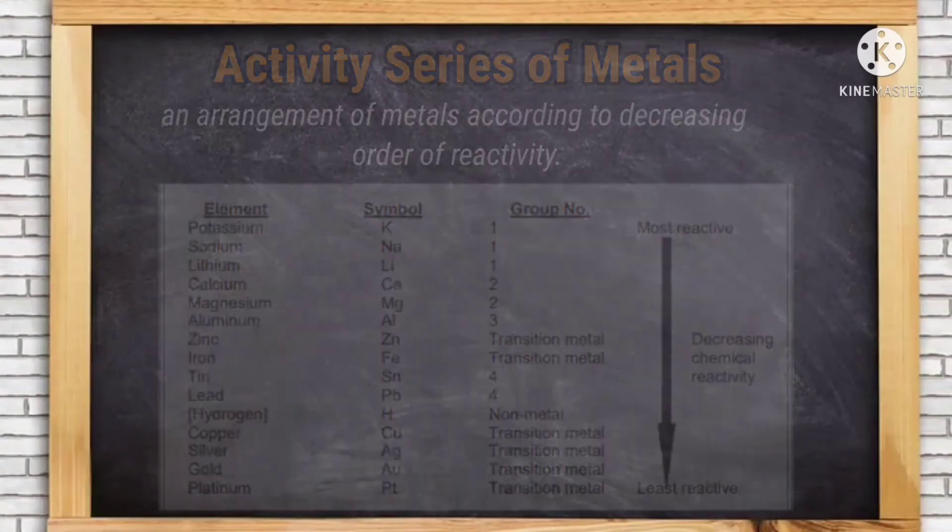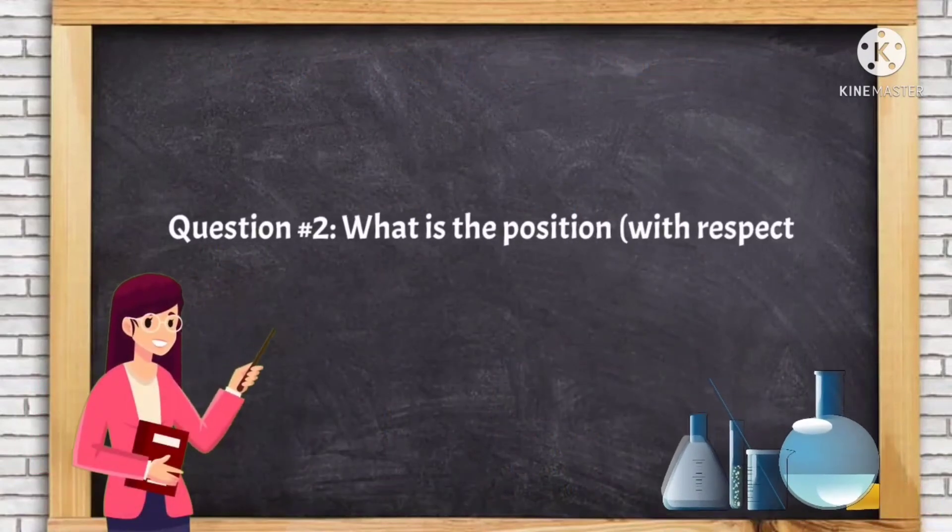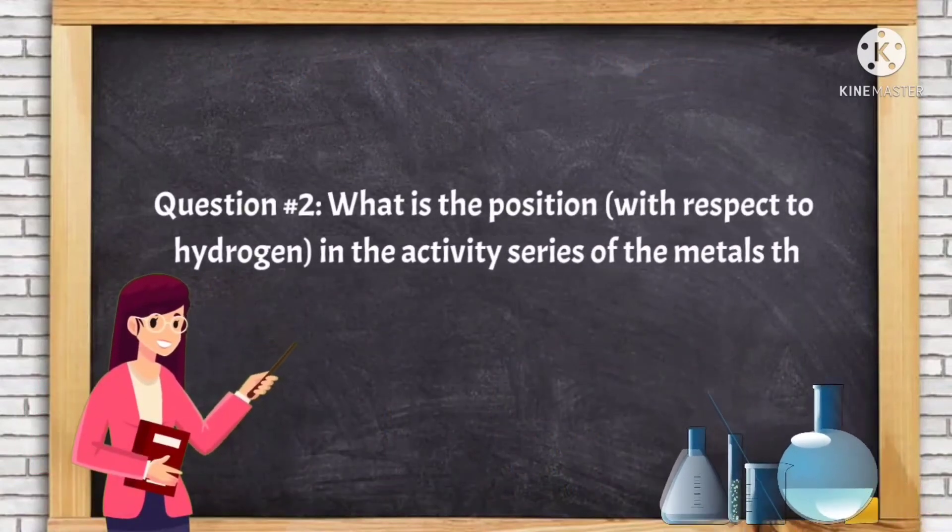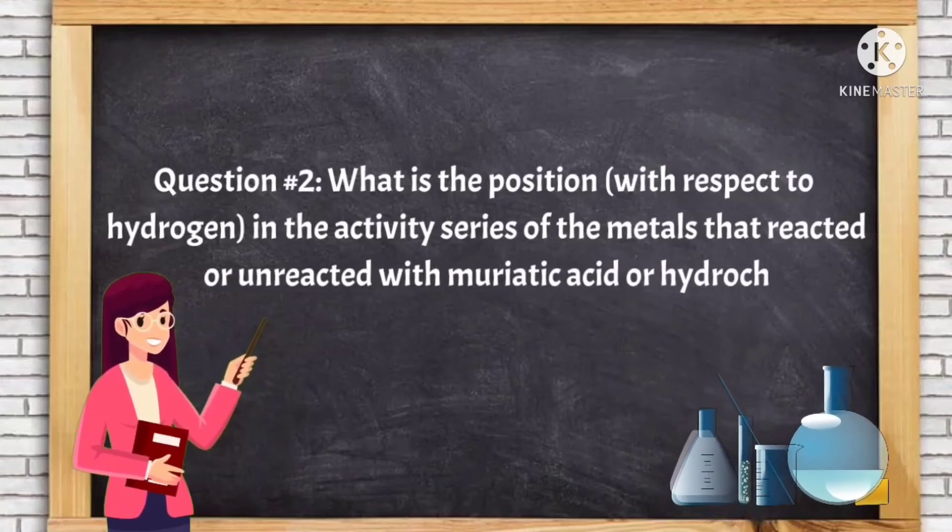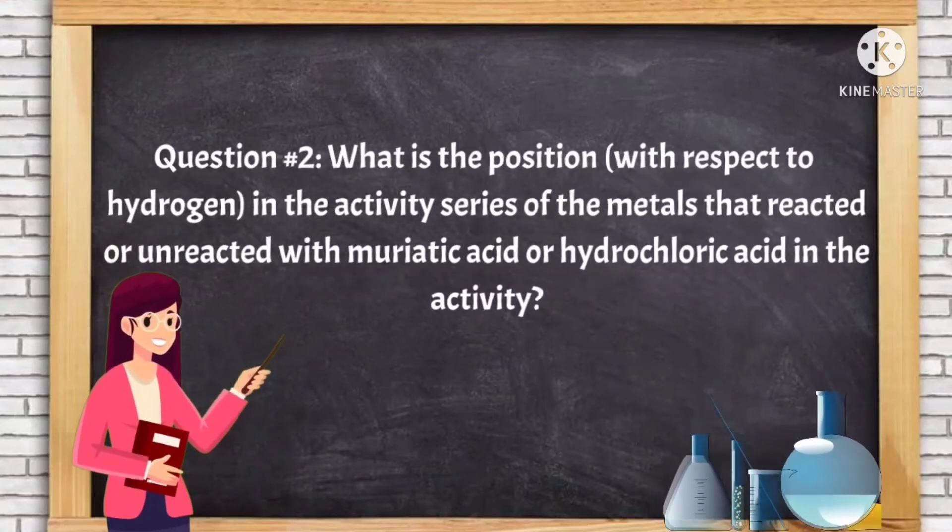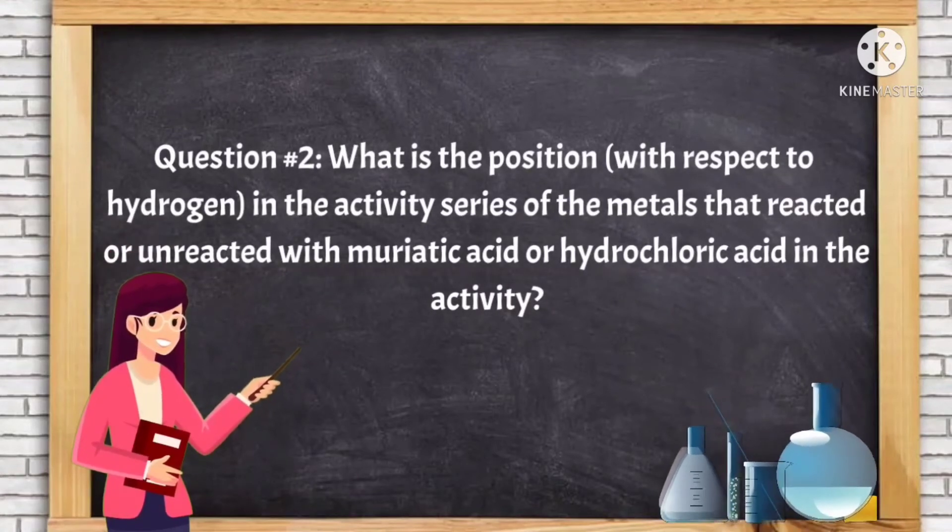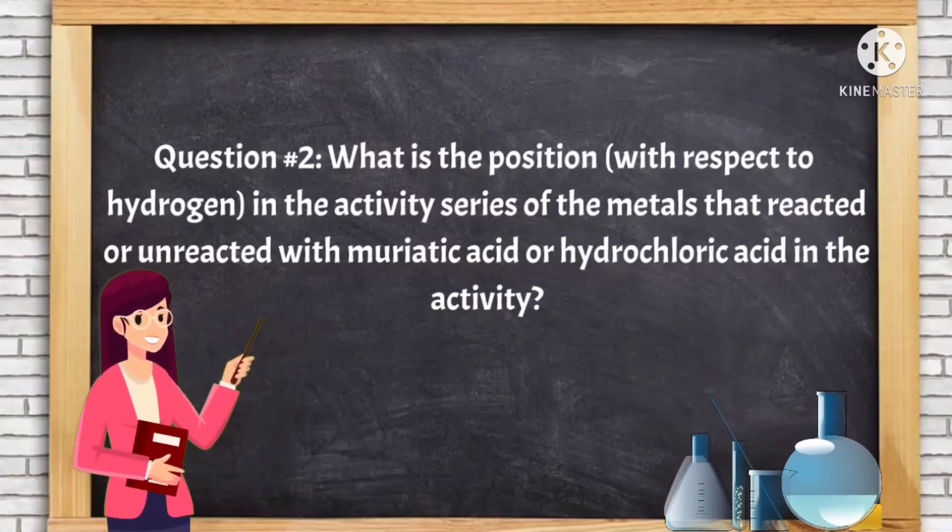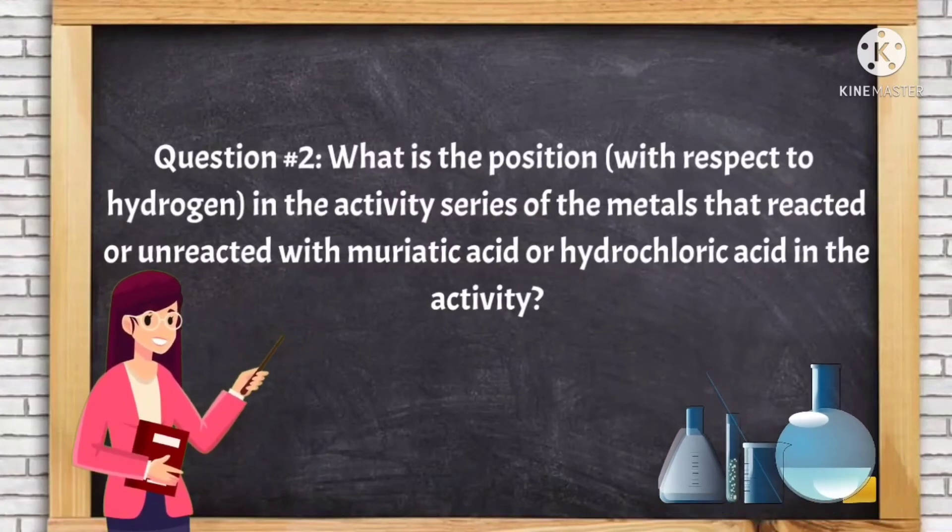Number two, what is the position with respect to hydrogen in the activity series of the metals that reacted or unreacted with muriatic acid or hydrochloric acid in the activity?